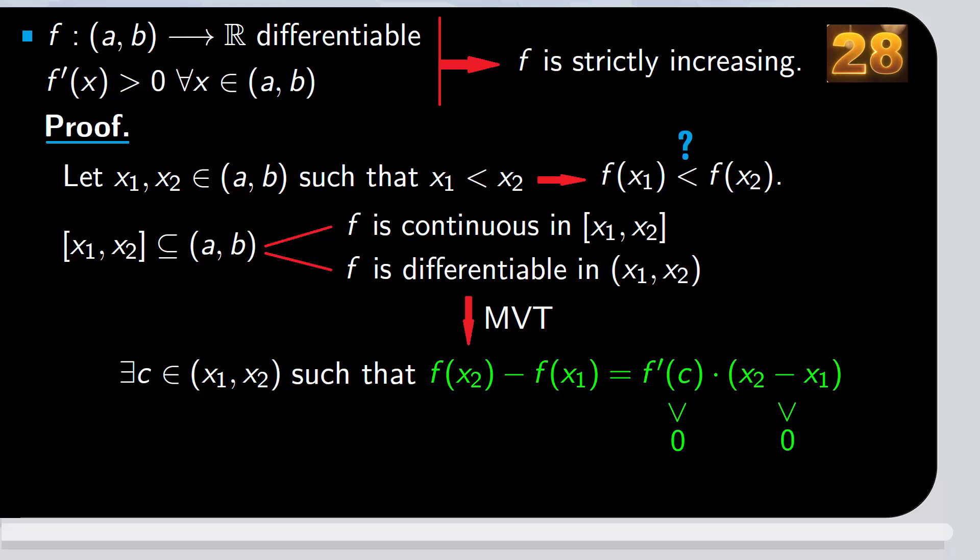We have that f(x₂) - f(x₁) is the product of two quantities greater than 0. Therefore, it's greater than 0, and it follows that f(x₂) > f(x₁), which is what we wanted to show. Thus, f is strictly increasing.